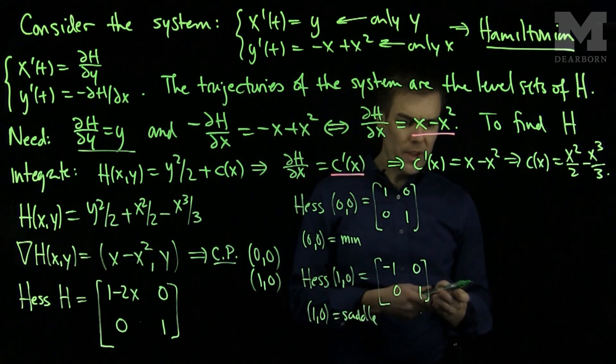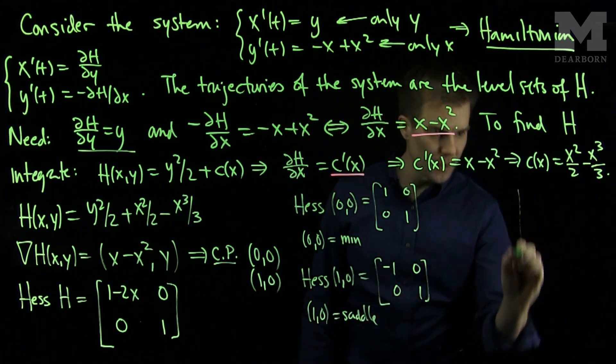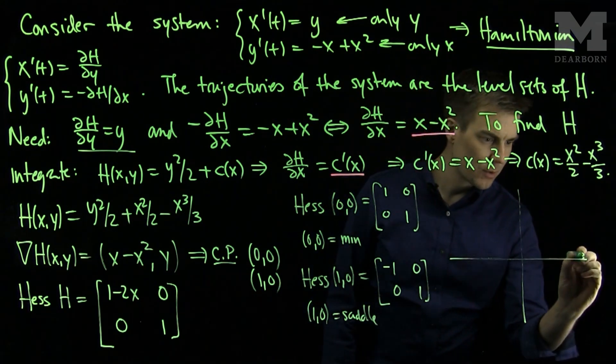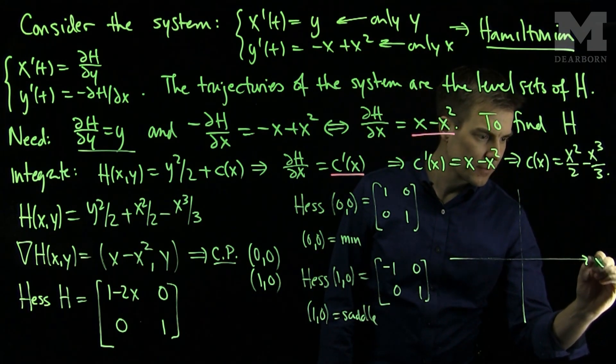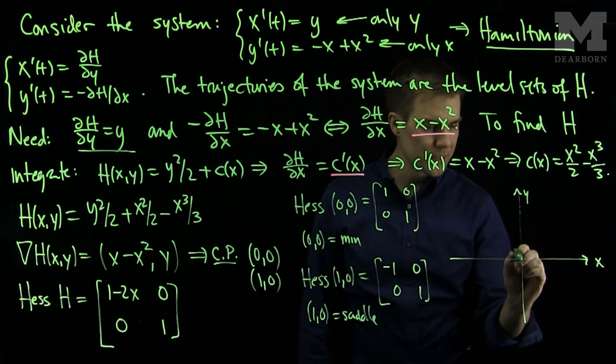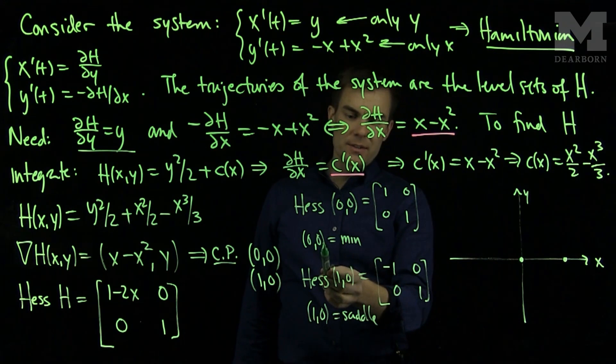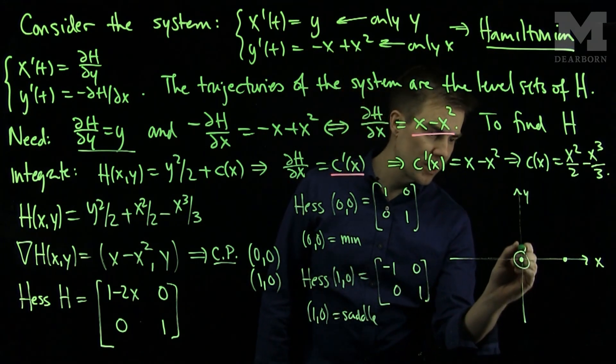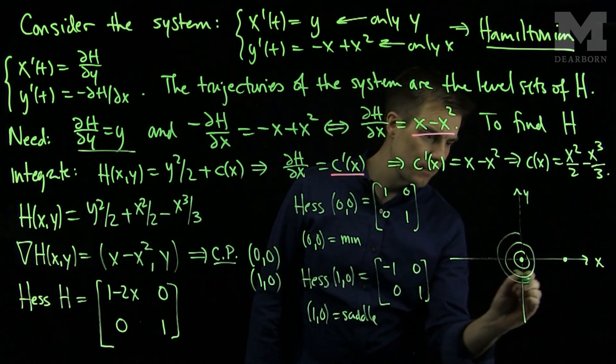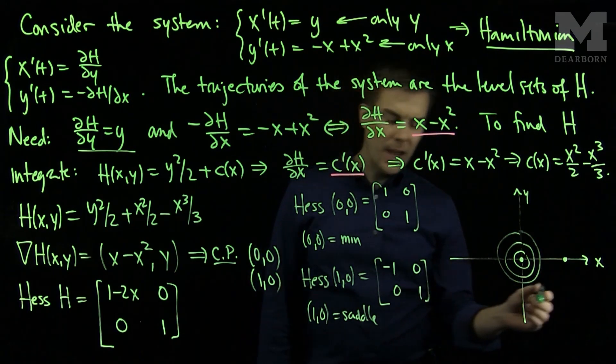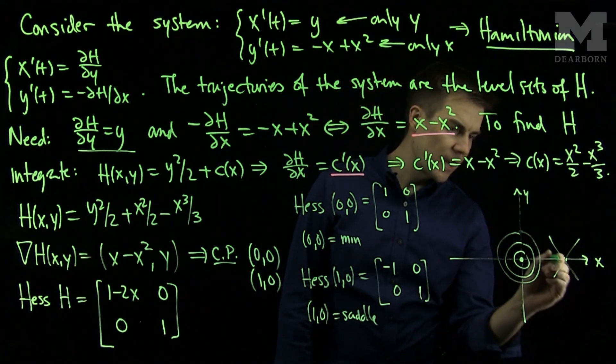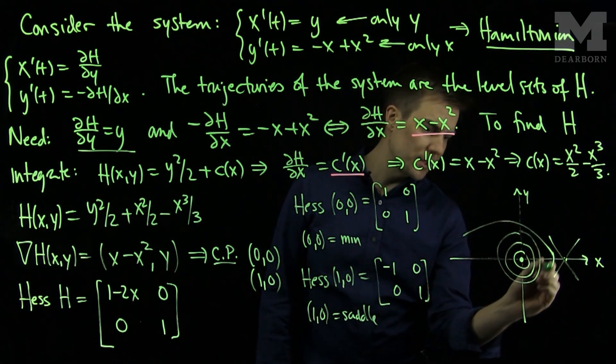Now, we can plot the trajectories of our system by plotting the level sets of the Hamiltonian. So this will be my x-axis and this will be my y-axis. I have a critical point at 0 and a critical point at (1,0). The critical point at (0,0) is a minimum, so I have circular trajectories. And the critical point at (1,0) is a saddle, so I have saddle-like trajectories.